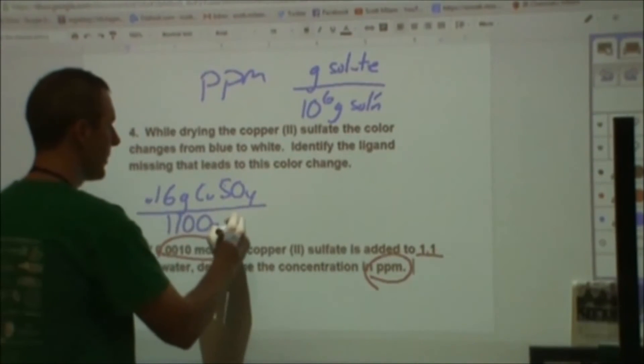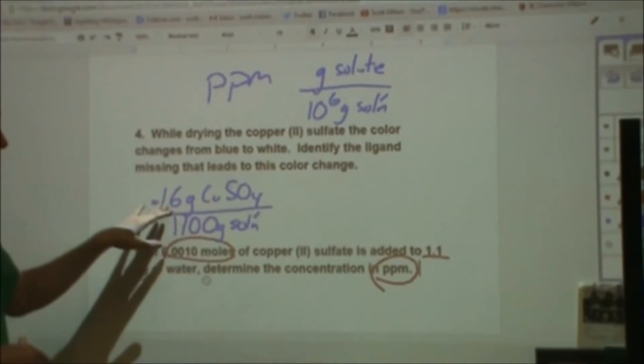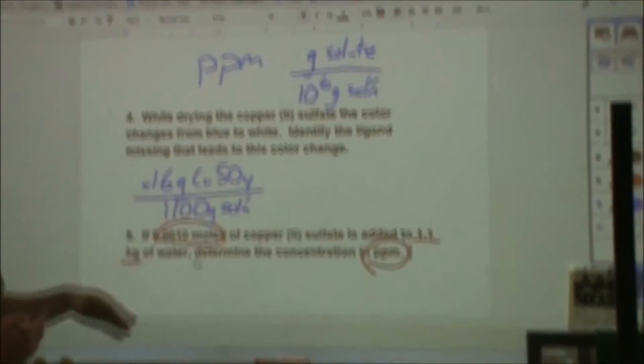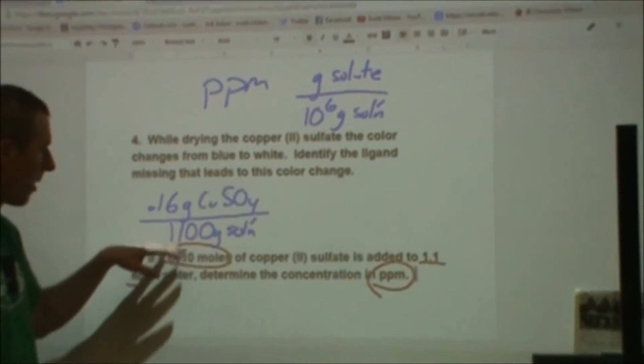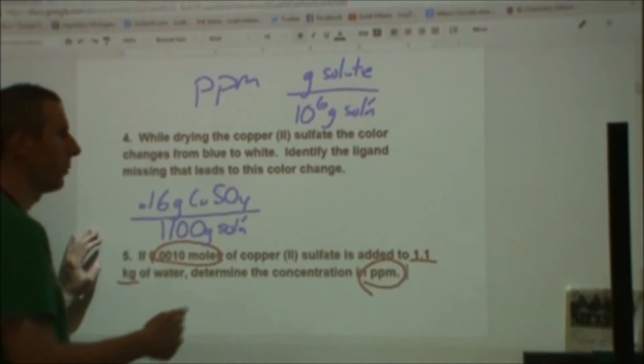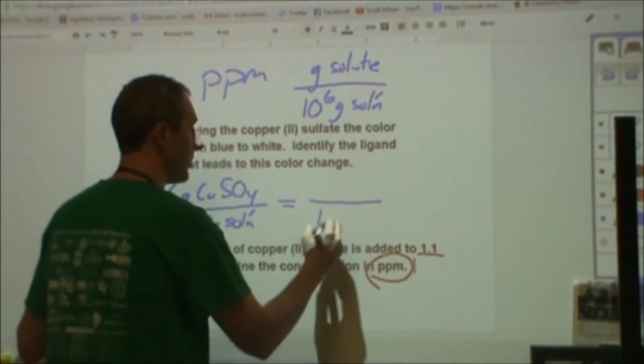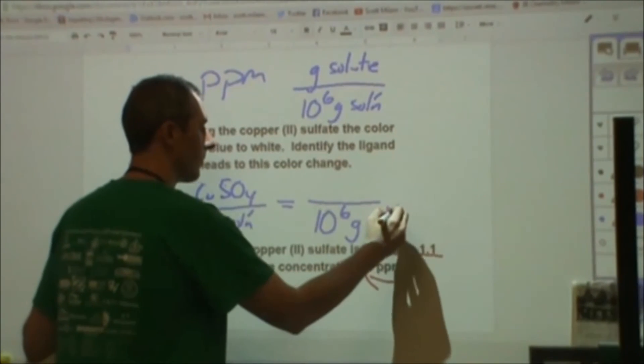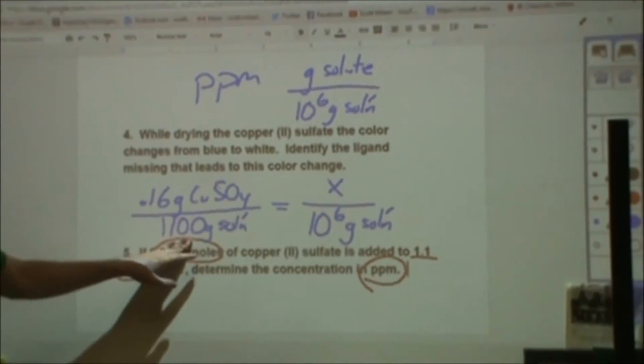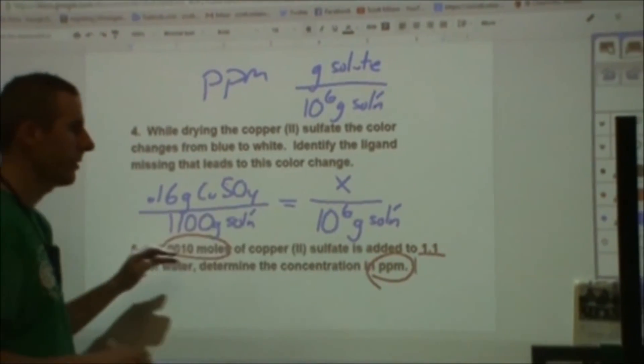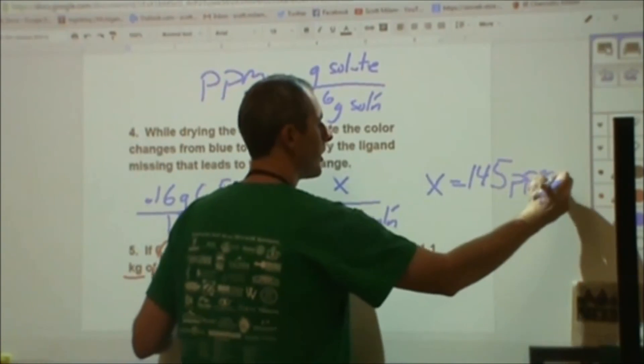I'm going to use that as my grams of solution. Technically I would have this added to it, but since this only has the sig figs in the hundreds place, adding 0.16 is really not relevant. It's kind of like you have so much money, you add a quarter, how much do you have? Well you kind of still have what you had in the first place. Because we don't really know exactly what we have here, we have a range. So we're going to set up a proportion where we say, what if I had a million grams of solution? Then how many grams of copper sulfate? I have this many in 1,100 grams. In a million, I would take this, divide it by this, times this. And then x ends up being 145 parts per million.